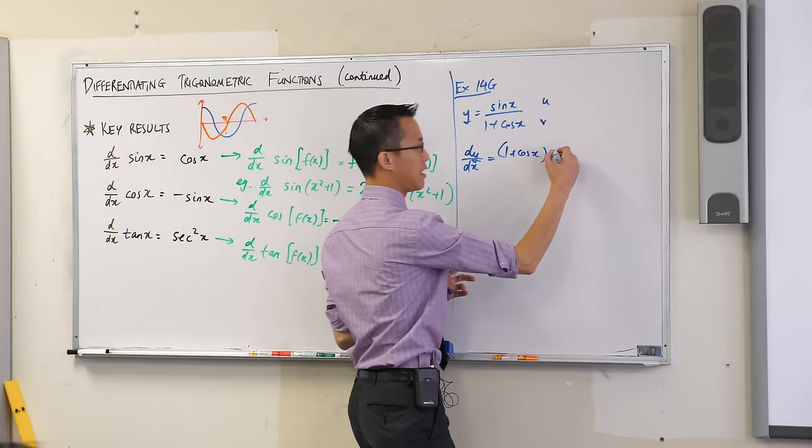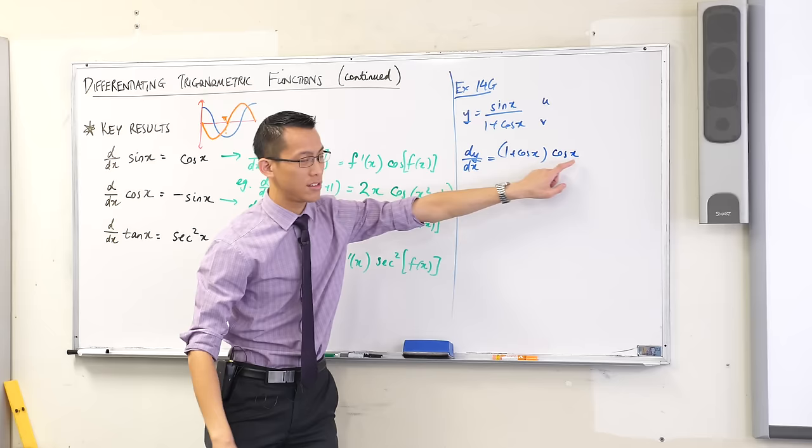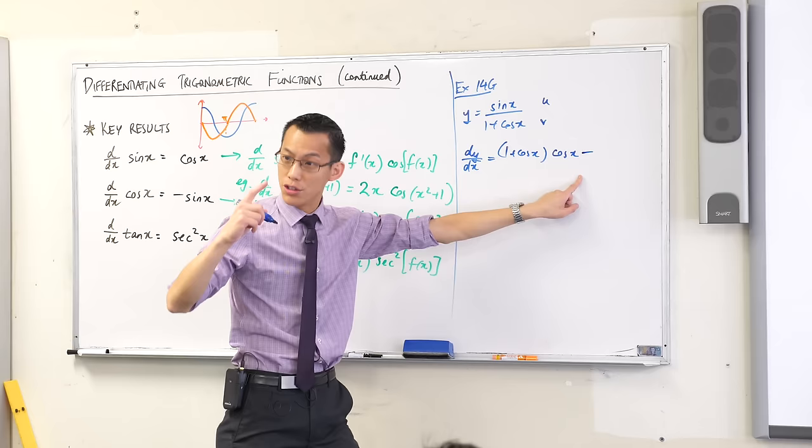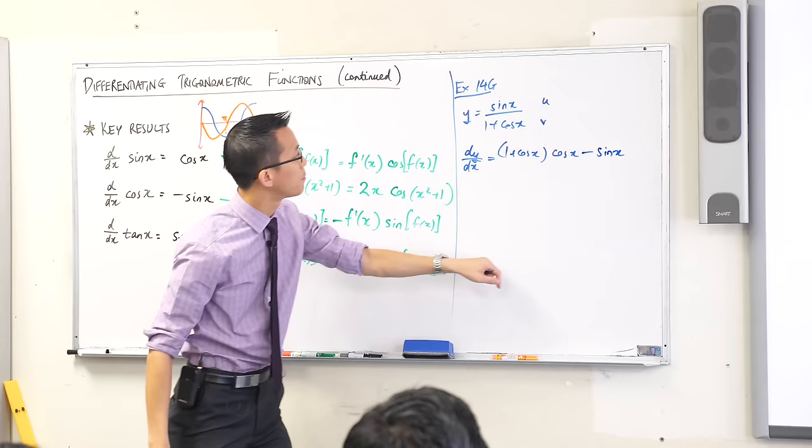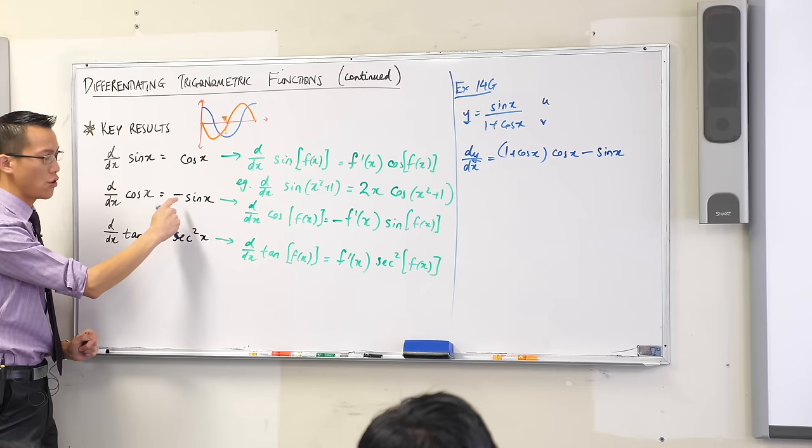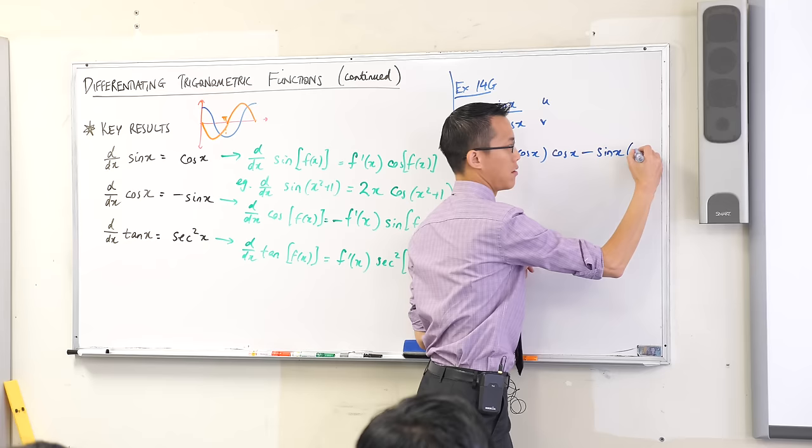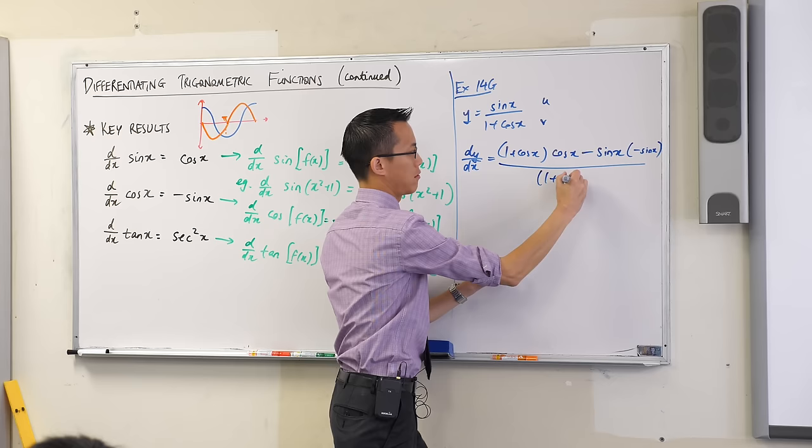It's really easy to get these all mixed up because of how much they all look similar. So there's my v u dash. What does quotient rule have on the numerator? It's a minus. Very good. And then I've got u v dash. So here's u. What's v dash here? Now be careful. So many little tiny traps to fall into. Cos x differentiates to negative sine x, right? So negative sine x. And then on my denominator there's v, so 1 plus cos x squared.